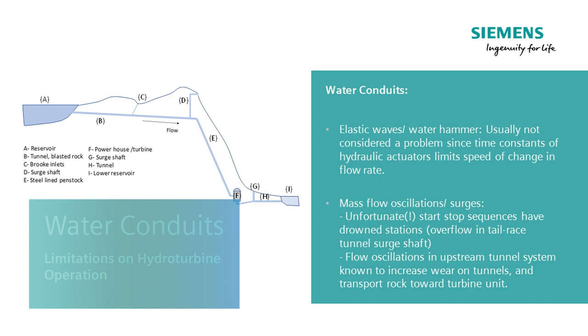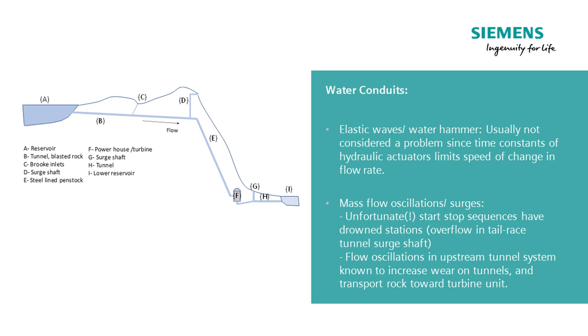The problem with determining why these rocks are both lifted and transported in the tunnel system is we don't have any way to measure flows or anything in those tunnels. It's far away from the power station itself — thousands of meters — and it's very difficult to access those tunnels, as they are all submerged with high pressures.